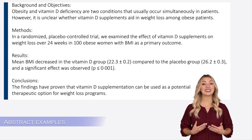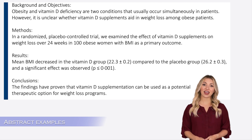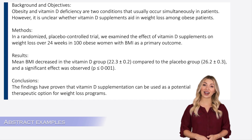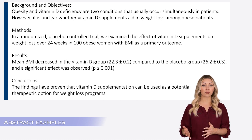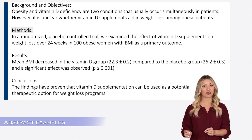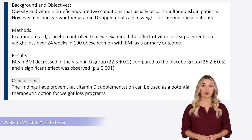Now let's look at the same example written in a structured format. The abstract is structured under four headings. Number one, background and objectives. Number two, methods. Number three, results. And number four, conclusions.